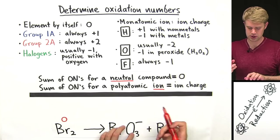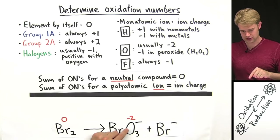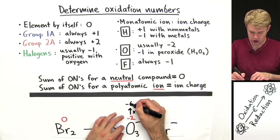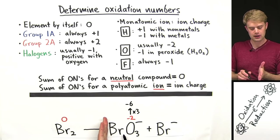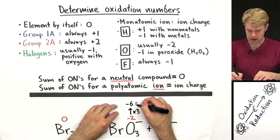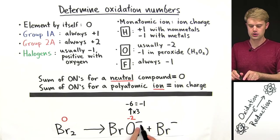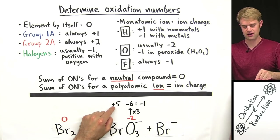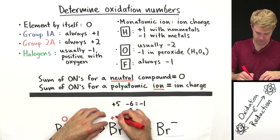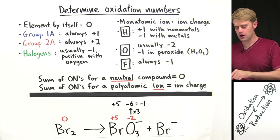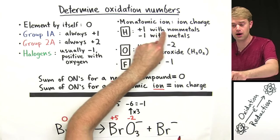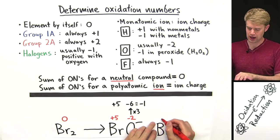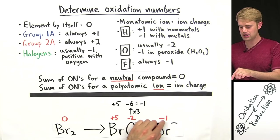Oxygen here usually has an oxidation number of minus two. We have three oxygens in this compound, so minus two times three gives a total of minus six for oxygen. Whatever Br's oxidation number is has to add together with minus six to make minus one, because that's the charge of this polyatomic ion. So Br's oxidation number is going to be plus five, because plus five minus six gives minus one. Then there's another Br on this side of the equation, Br⁻, which is a monatomic ion. Its oxidation number is the same as its ion charge: minus one.